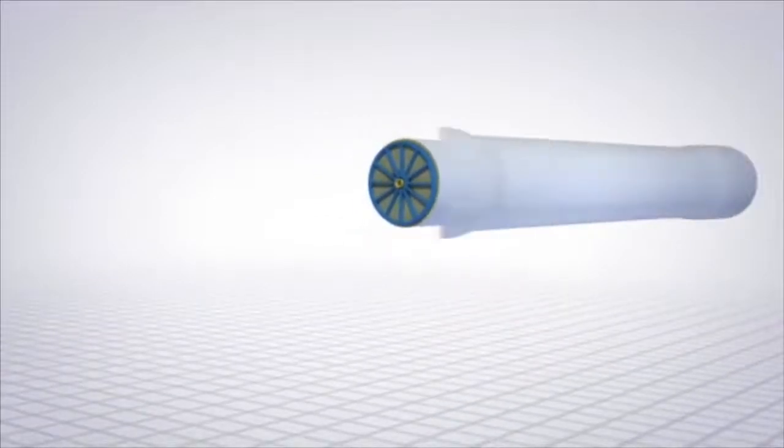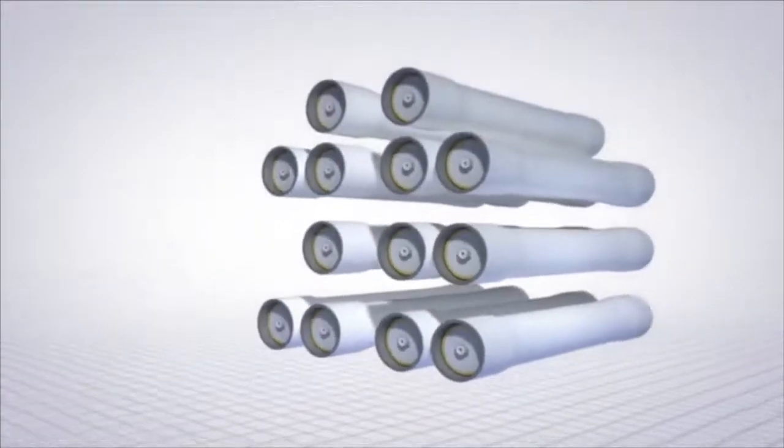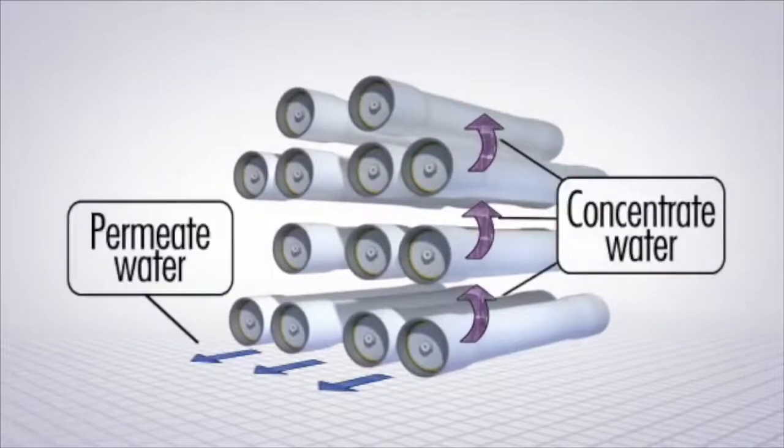The pure permeate water flows out the core tube and one end of the pressure vessel and the concentrate water flows out another outlet.